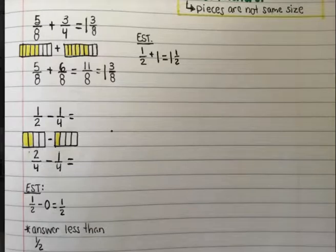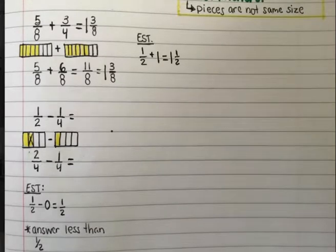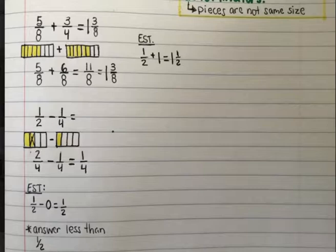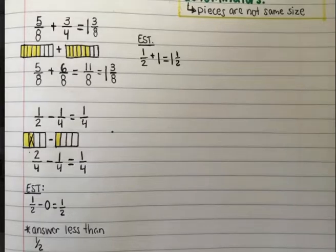So let's see if that is the case. Two fourths take away one fourth — I can cross that off in my model. I see now that I only have one fourth left. And one fourth is less than a half, so it is absolutely a reasonable answer. So one half minus one fourth equals one fourth.